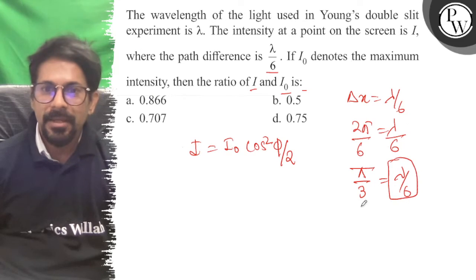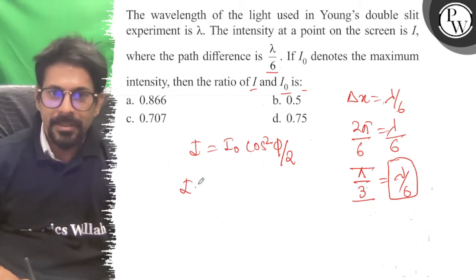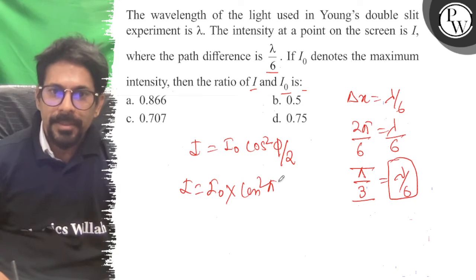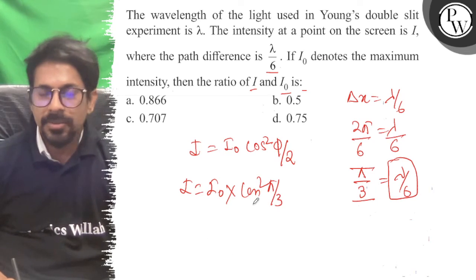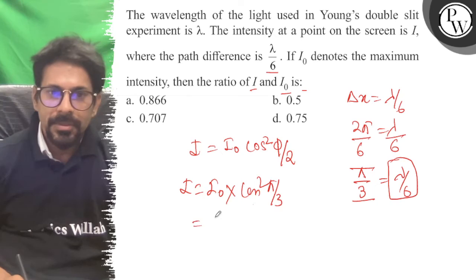For lambda by 6 path difference, the phase difference is π by 3. So we have I₀ into cos² φ. Cos² of π by 3, cos π by 3 is root 3 by 2, so